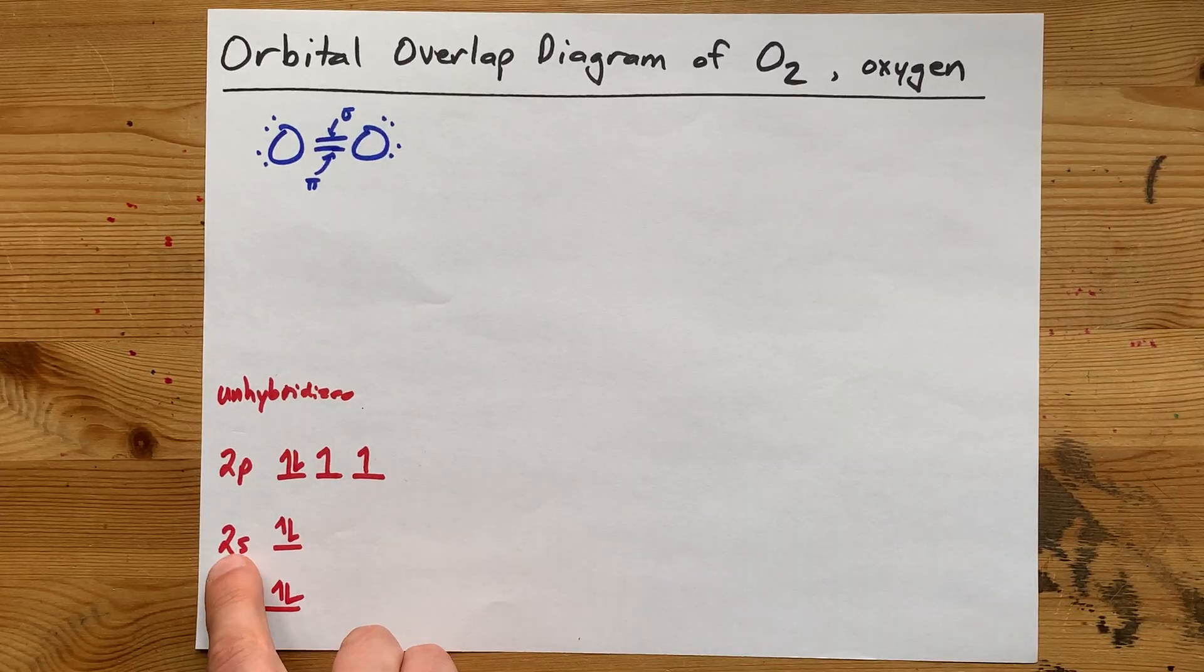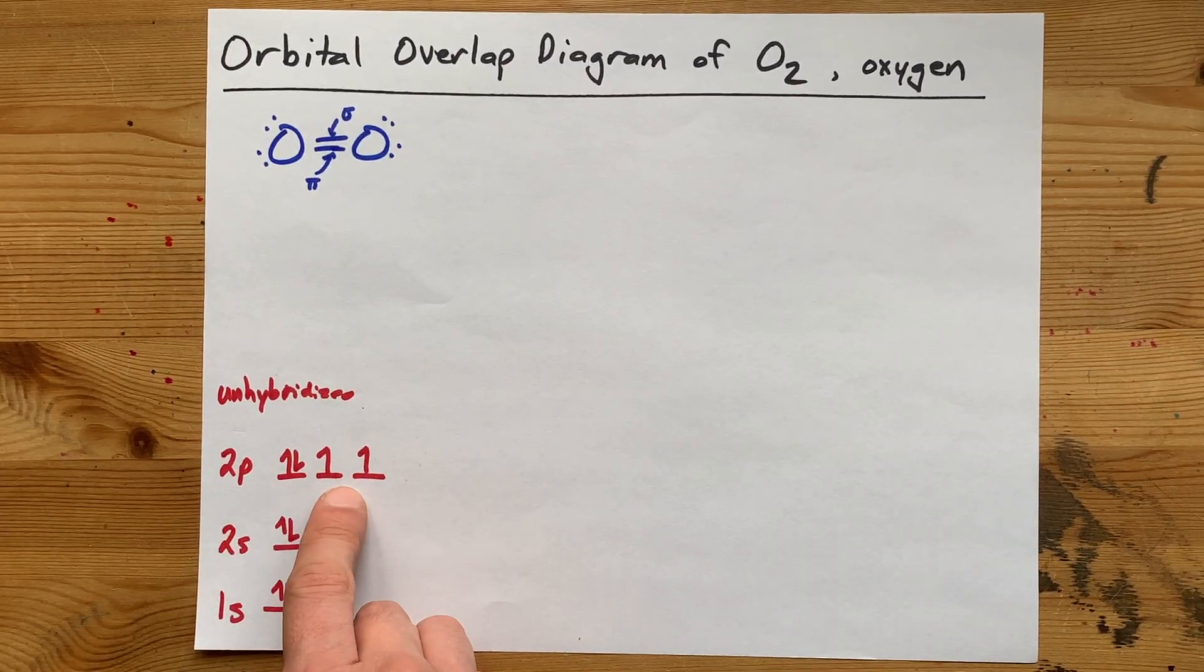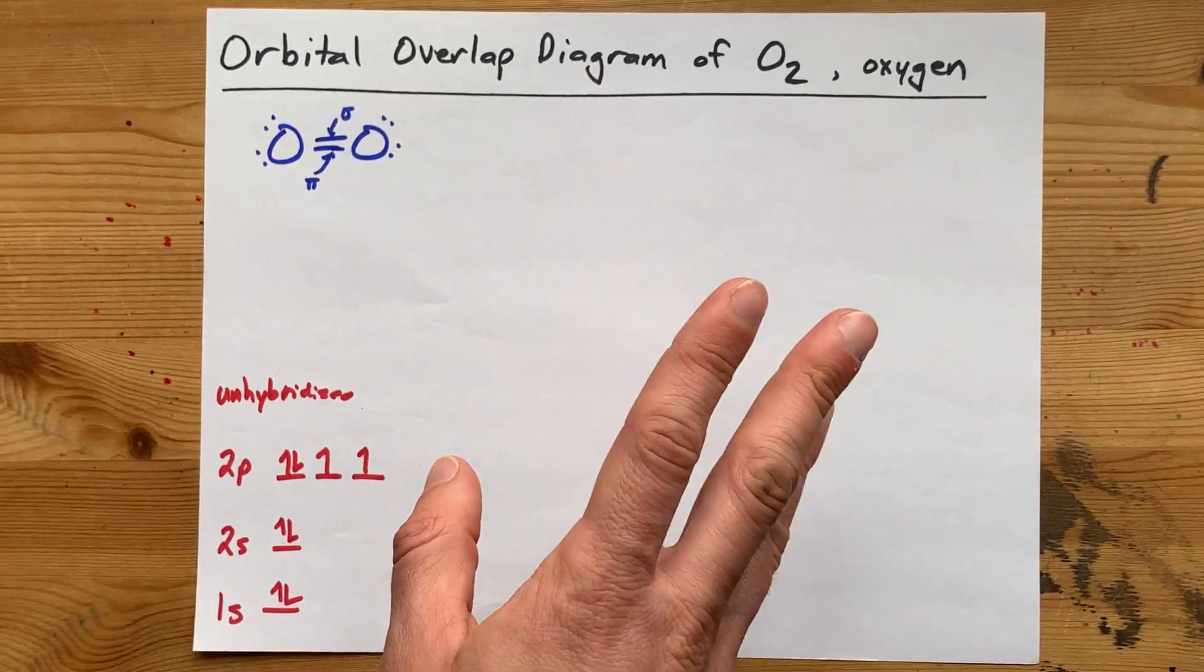In the second shell, it's distributed 2s2, 2p4. It's just the way it is when you have 8 electrons.